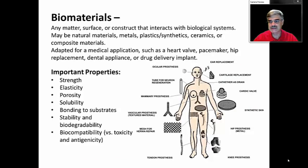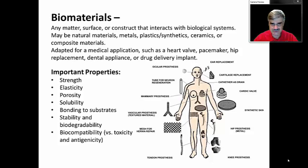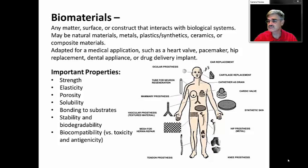A large area of research and applications of materials is in the area of biomaterials, which can be defined as any material or surface or construct that interacts with biological systems. Now these may be natural materials, synthetic materials, metals, ceramics, any composite materials which are adapted for medical application. Examples would be heart valves and pacemakers, hip or knee replacements, dental appliances, drug delivery systems, and artificial skin.